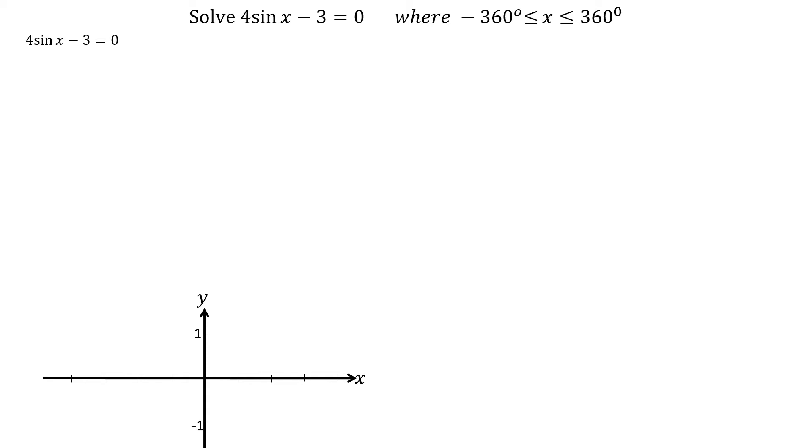To solve 4 sin x minus 3 equals 0, where x is between minus 360 and plus 360 degrees, we first add 3 to both sides and divide by 4, getting sin x equals 3 quarters, or sin x equals 0.75.